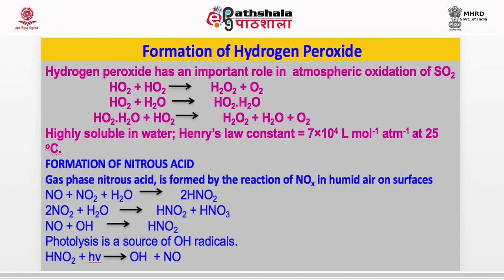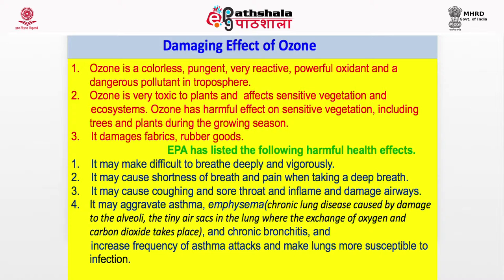Nitrous acid (HONO) is another inorganic compound — a weak acid but with important atmospheric chemistry. In the gas phase, nitrous acid is formed by the reaction of NO and NO2 on humid surfaces, that is, on wet surfaces where there is a water film. NO + NO2 + H2O → 2HONO — this is how it is formed in the aqueous phase. This reaction can take place in rainwater, fog water, or cloud water. 2NO2 + H2O → HONO + HNO3 (self-reduction). NO2 reacts with OH to form HONO. H2O2 on photolysis gives OH. So nitrous acid is also a source of OH radicals.